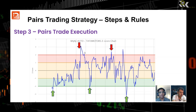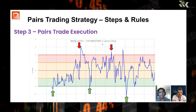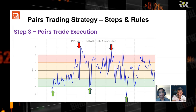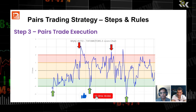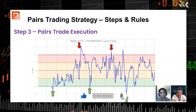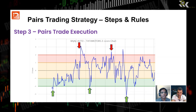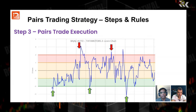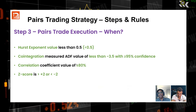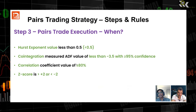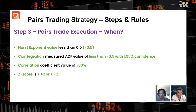When shorting the pair, you short stock A and buy stock B. You keep repeating this process, and you can have stop loss and target price — the normal trading process. So when executing, we've learned correlation, cointegration, mean reversion, and Z-score — and now we have all that knowledge to initiate pair trading execution.